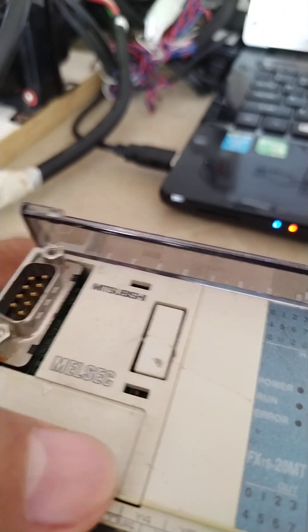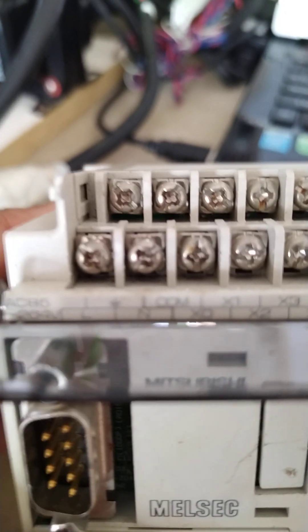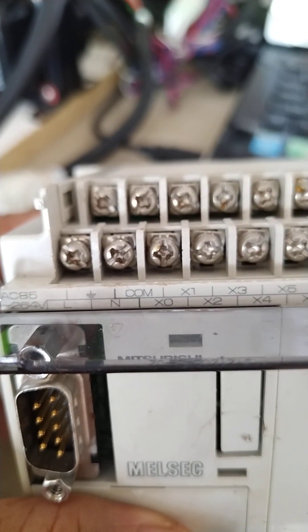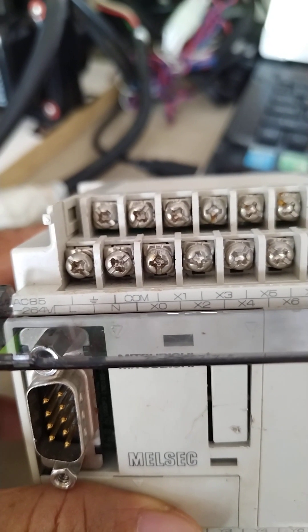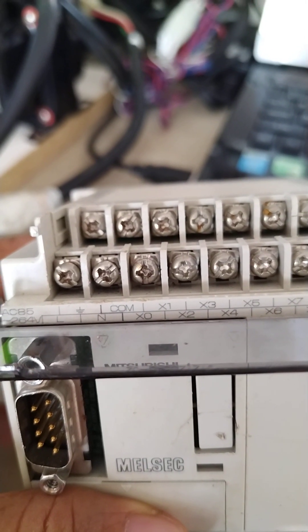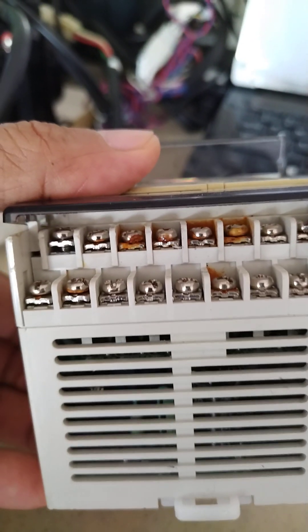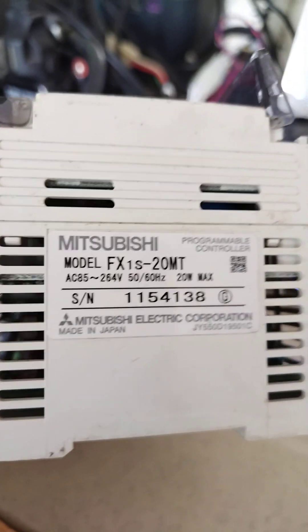Now you will notice that if you will try to measure the input, okay, so you can see there, let's say the X0 and the common, if you will use a multimeter you will notice that each input from any input to common you will be measuring at 24 volts DC there. So meaning this PLC is made in Japan, as you can see in the label.